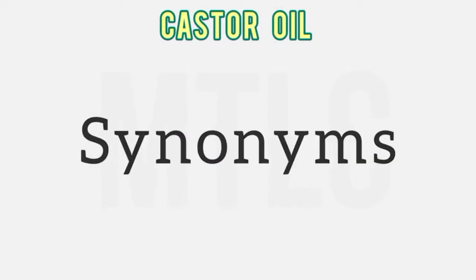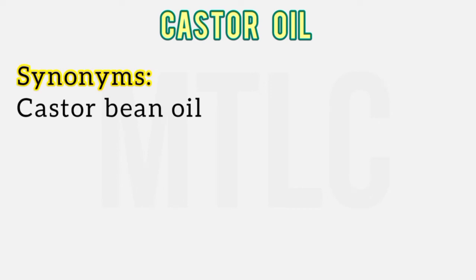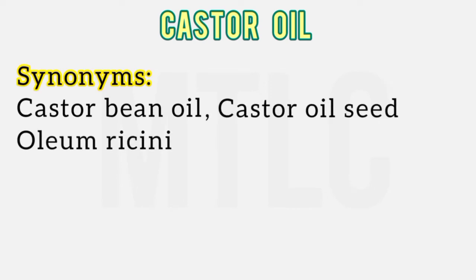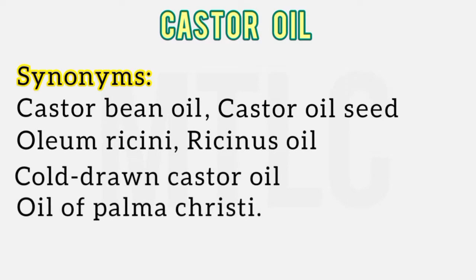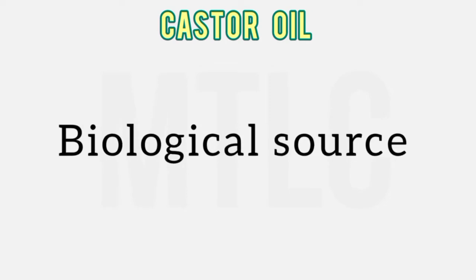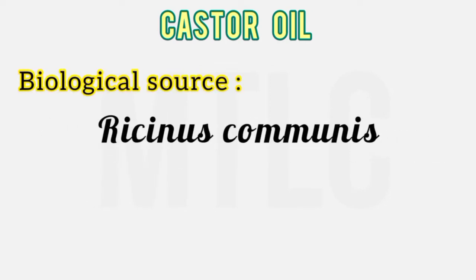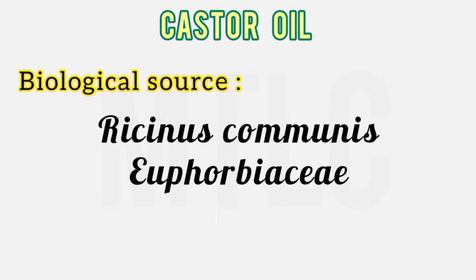Its synonyms are: castor bean oil, castor oil seed, folium resiny, resinous oil, cold drawn castor oil, and oil of Palmacristi. Its biological source is Ricinus communis — that is the botanical name — belonging to the Euphorbiaceae family. It is obtained by cold expression.